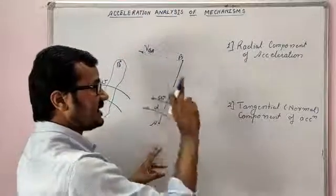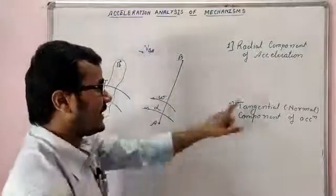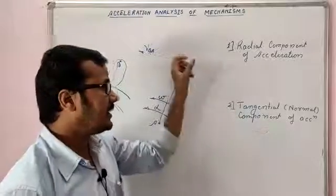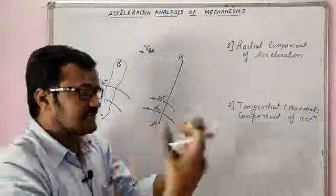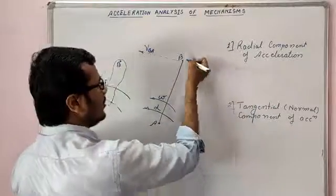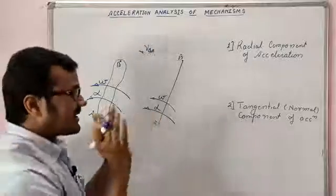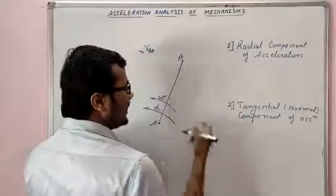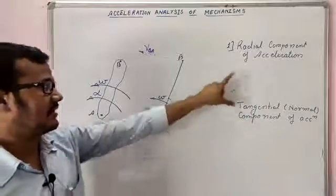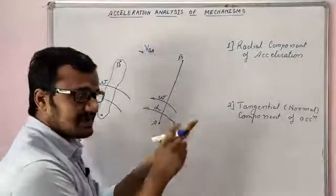Now talking about acceleration — there are two components: radial component and tangential component. The radial component will be parallel to the link, and the tangential component will be perpendicular to the link — that is, parallel to the velocity.